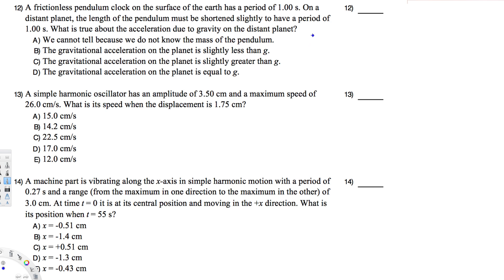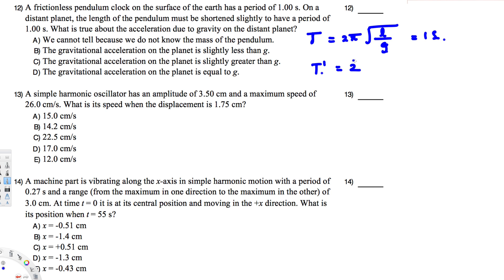The period equation for a frictionless pendulum is T = 2π√(L/G). Initially we had one second. On the distant planet, we have to slightly reduce the L value to get the same period of one second.